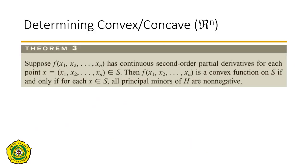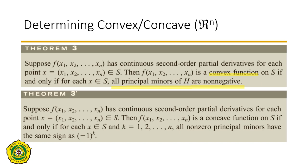Once we know how to create the Hessian and the principal minors, we can use them to determine whether a function is convex or concave. If all principal minors of the Hessian are non-negative, the function is convex. For a concave function, the requirement is that all non-zero principal minors have the same sign as (−1)^k, where k is the order of the minor.